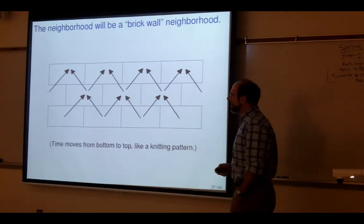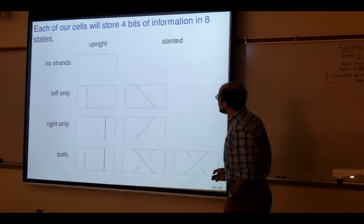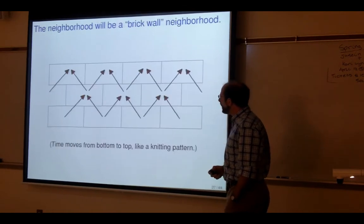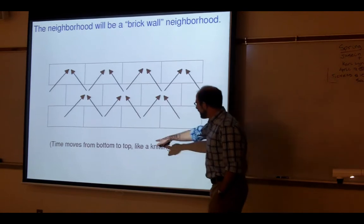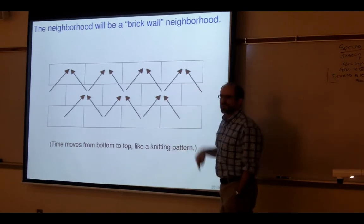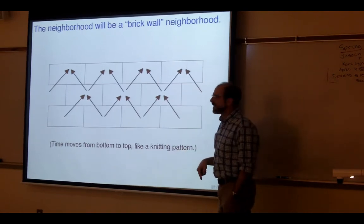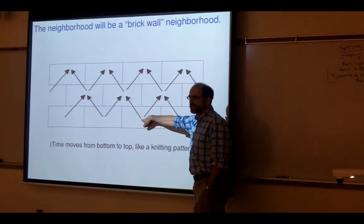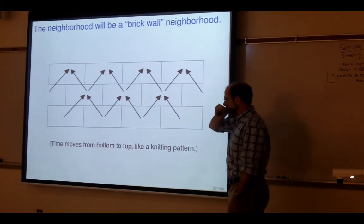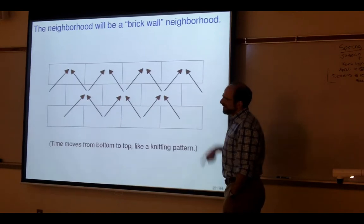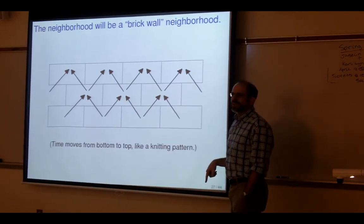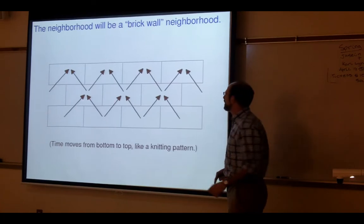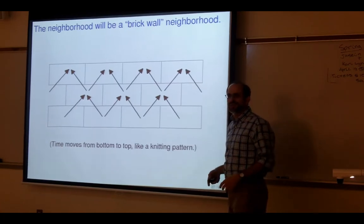For the neighborhood it seemed convenient to use a brick-wall neighborhood. Like knitting patterns, time moves from bottom to top, and each cell is influenced by the staggered cells below-left and below-right — or really, 'before' in the time dimension, since the second spatial dimension is the same as the time dimension.